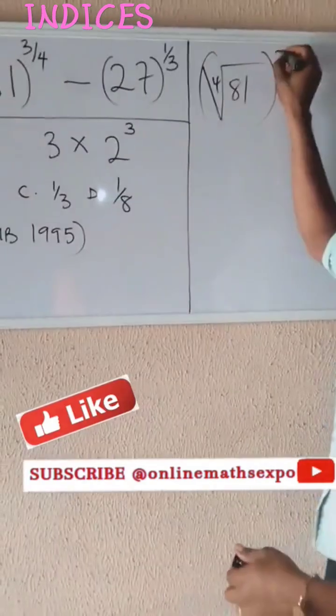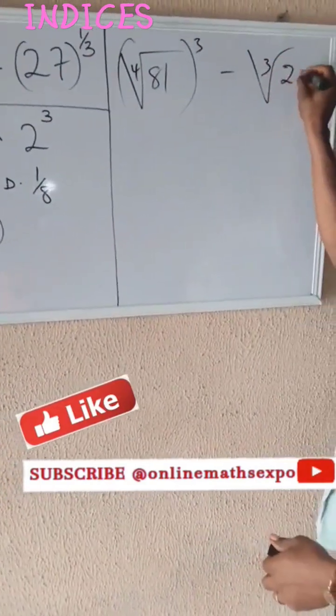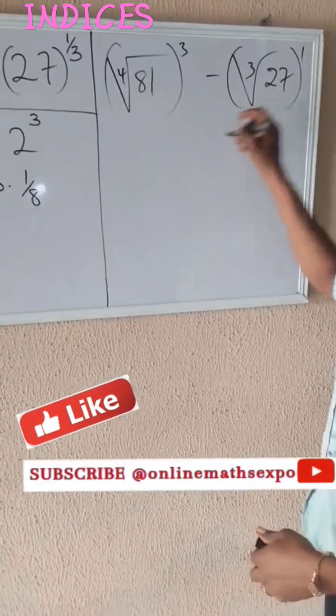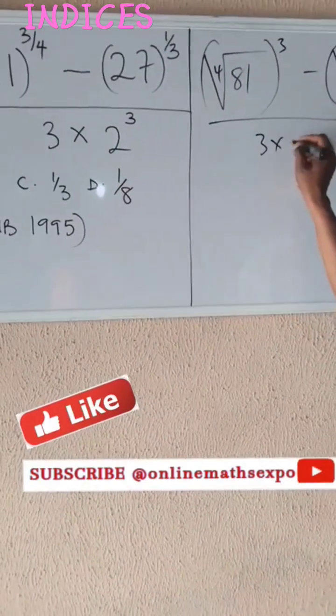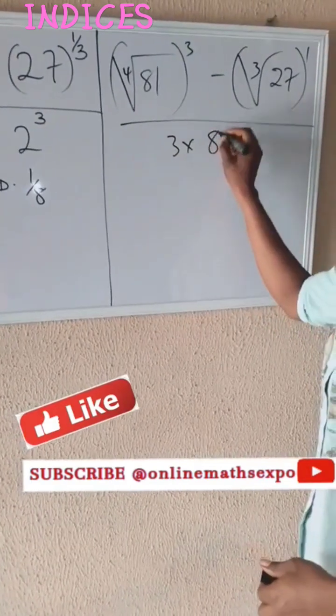Minus cube root of 27 raised to power 1, all over 3 times 2 raised to power 3. That's 2 times 2 times 2, which will give us 8.